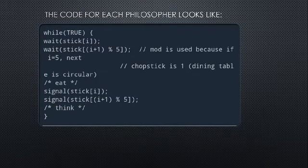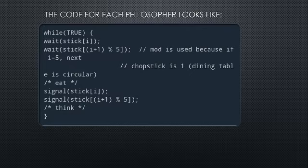The code for each philosopher works as follows: when a philosopher wants to eat the rice, he will wait for the chopstick at his left and pick up that chopstick. Then he waits for the right chopstick to be available and picks it up as well. After eating, he puts both chopsticks down.